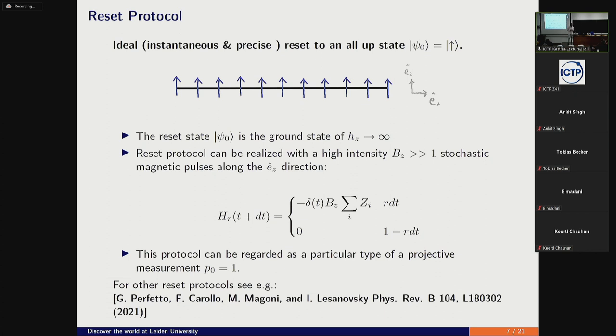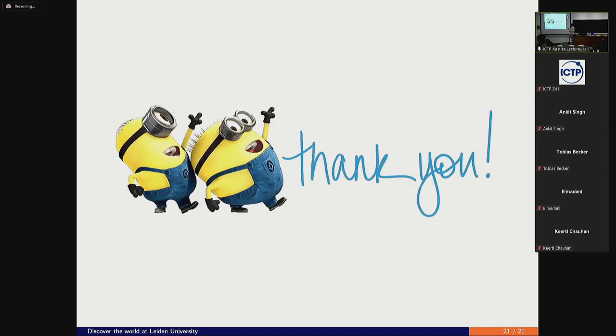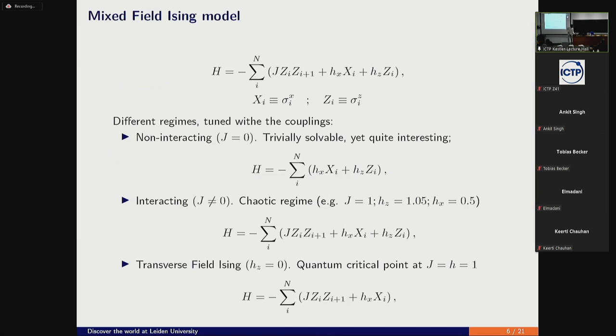Okay, so the reset protocol is the simplest one. As I said, I'm learning about this, so we take the simplest one where we start with the state that's all up, and it's also the reset state. We set the system to all up and let it evolve. How you can see this resetting protocol physically is you have stochastic pulses of very high magnetic fields. If you turn them on, regardless of the spin configuration, it will flip all the spins up. Also, resetting is some special type of measurement where with probability one you measure the system into the initial state. For other reset protocols, you can check, for example, one of Perfetto's papers.